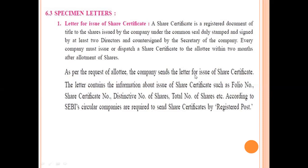As per the request of the allottee, the company sends the letter for issue of share certificate. The allottee requests the share certificate and the company sends it accordingly. The share certificate letter contains information about the issue of share certificates, such as the folio number, share certificate number, distinctive number of shares, and total number of shares. According to SEBI's circular, companies are required to send share certificates by registered post, meaning the certificate will be forwarded to you through the post office.